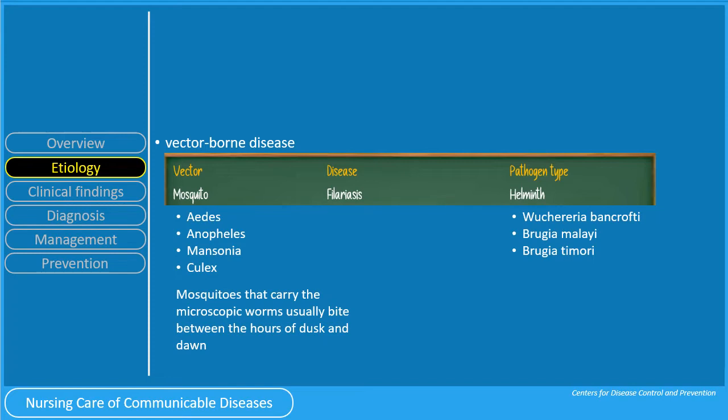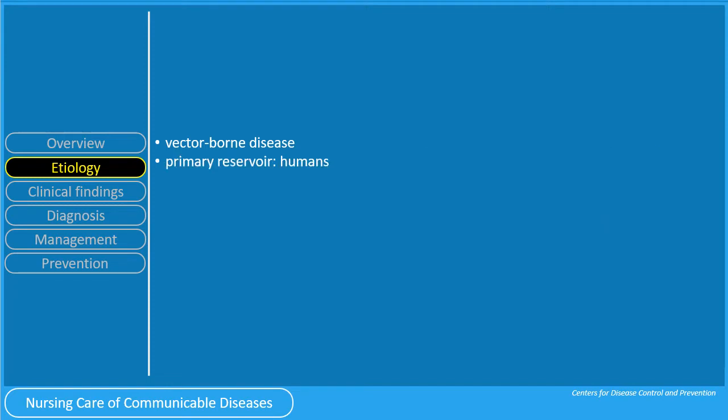There are three different filariasis species that can cause lymphatic filariasis in humans. Most infections worldwide are caused by Wuchereria bancrofti. In Asia, the disease is also caused by Brugia malayi and Brugia timori. The primary reservoir for filariasis is humans, and the vector is mosquitoes. Transmission from human to human occurs via mosquito bites.